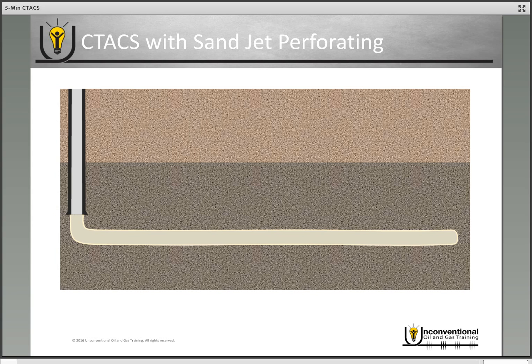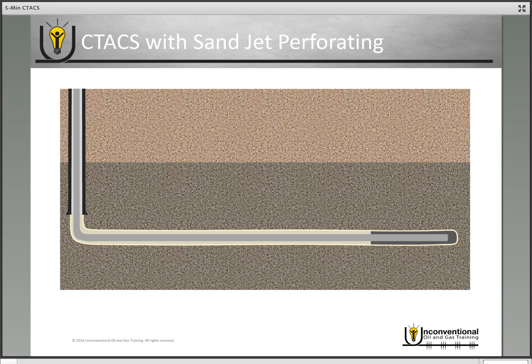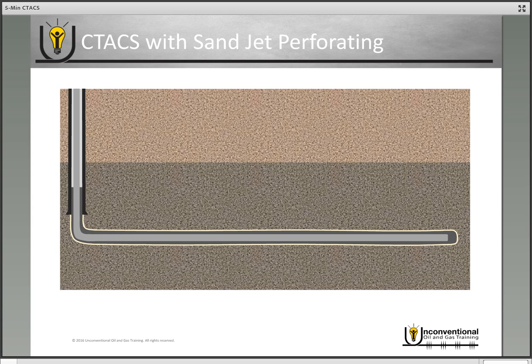We already have our horizontal well drilled in our diagram and we'll run a string of casing into the wellbore. Once that casing gets to the intended depth, you pump cement around it to provide isolation between your casing and your formation. The cement sets up over time and once you've pressure tested, you can move your drilling rig off of location.